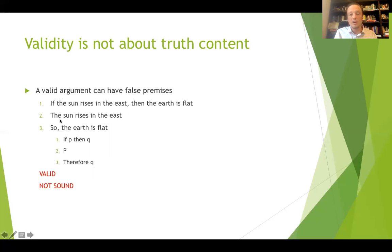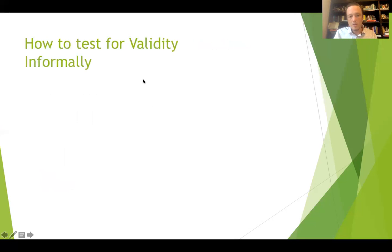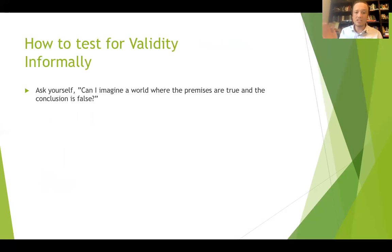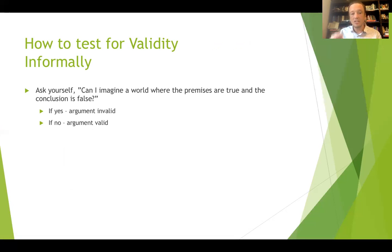A sound argument is one where it's valid and the premises are actually true. So valid and sound together makes a good argument — but just being valid doesn't require true premises. How do you test for validity informally? All you have to do is ask yourself: can I imagine a world where the premises of this argument are true and the conclusion is false? If the answer is yes, you've got an invalid argument. If the answer is no, you've got a valid argument.